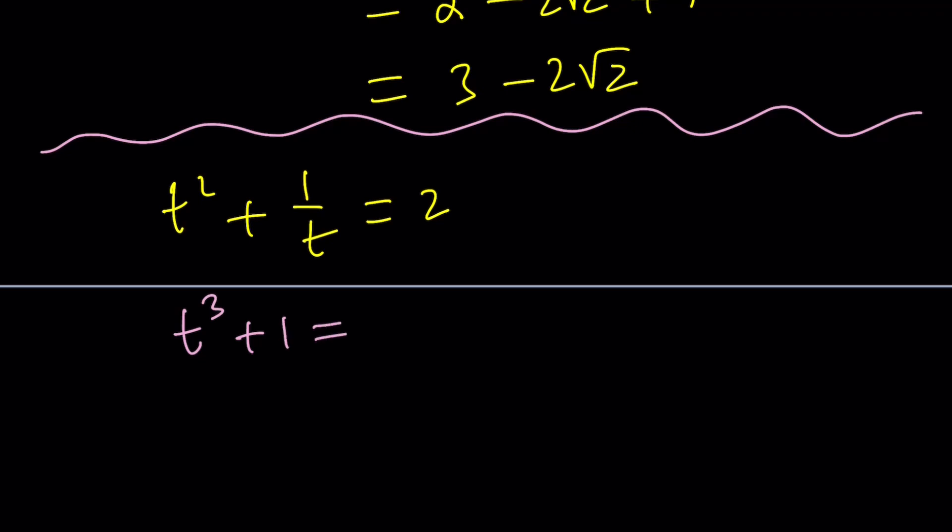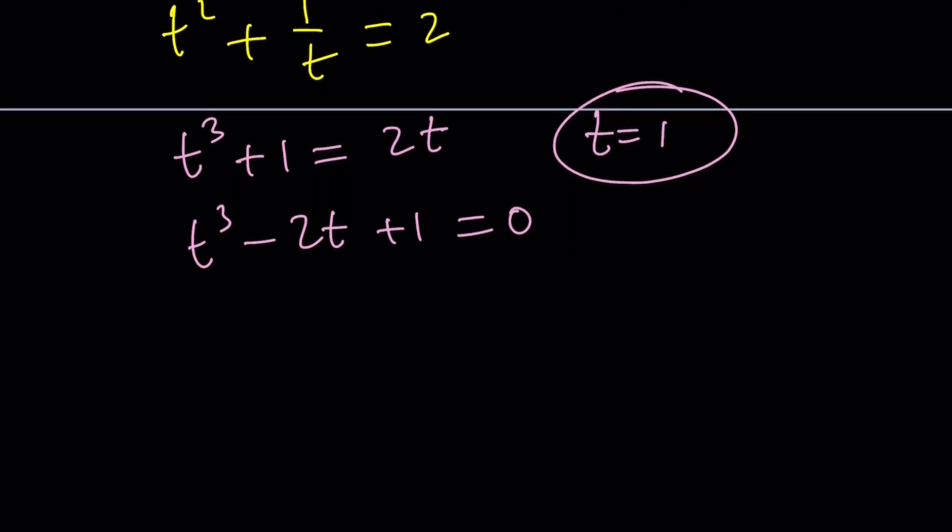So now this looks like a weird equation but let's get rid of the radicals multiply everything by t and it becomes a cubic. Don't worry about it because you don't need the cubic formula to solve this problem because notice that t=1 works. It is a solution.